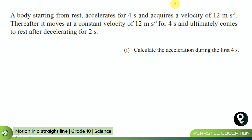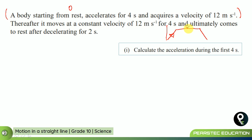Now let's see the next question. A body starts from rest — again, zero. It accelerates for four seconds and acquires a velocity of 12 meters per second. After that, it moves at a constant velocity of 12 meters per second for another four seconds, and ultimately comes to rest after decelerating for two seconds. So it goes like this: uniform acceleration, then moving at the same velocity, then coming to rest.